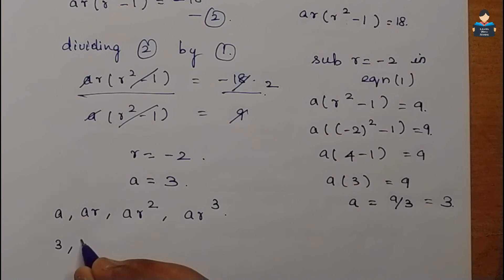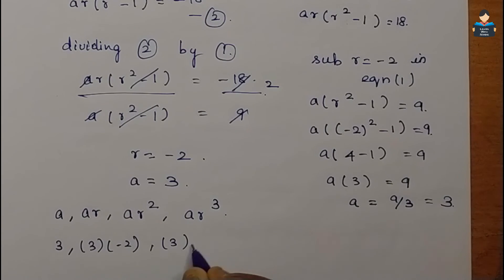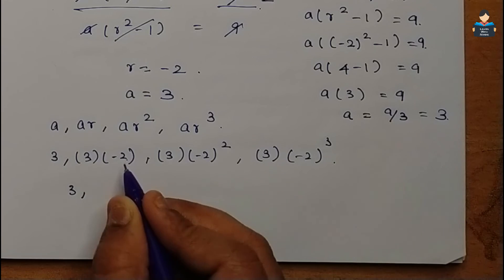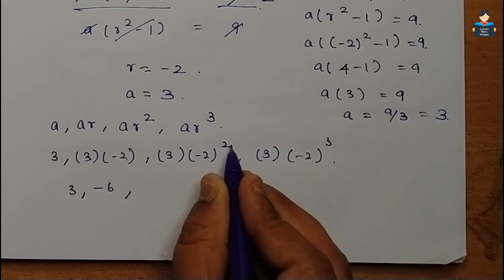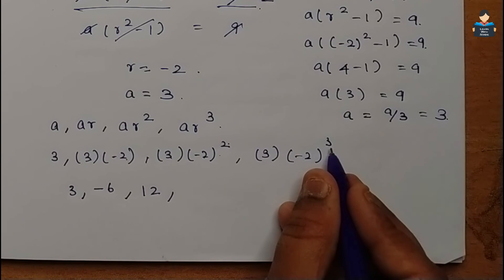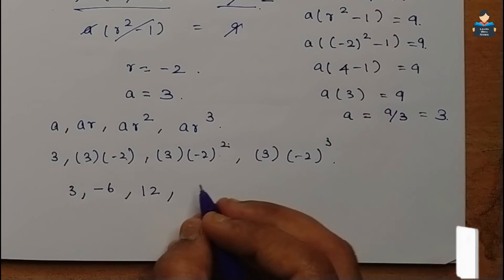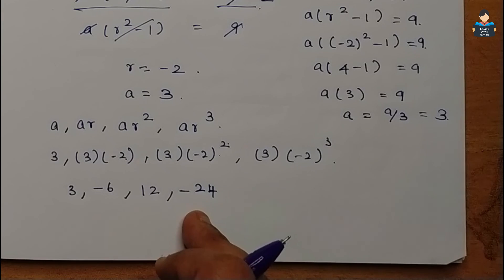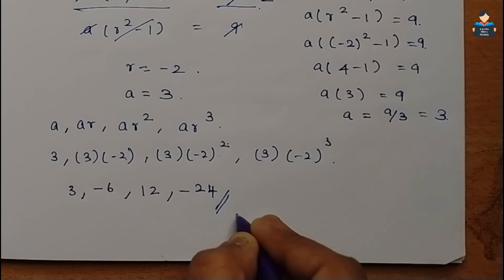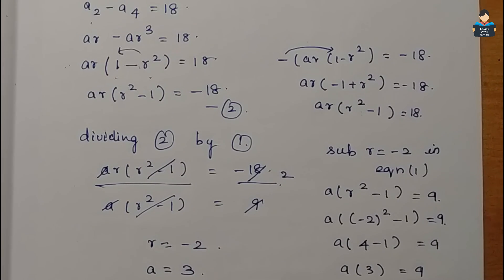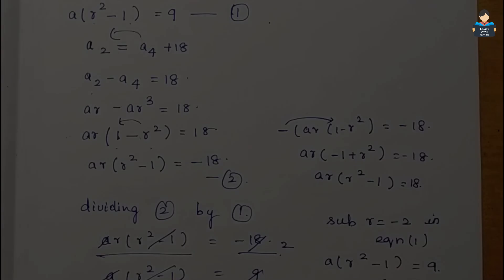The four numbers are: a = 3, ar = 3×(-2) = -6, ar² = 3×4 = 12, ar³ = 3×(-8) = -24. So the four numbers in GP are 3, -6, 12, -24. This is the final answer. The video is complete; the next video will cover additional sums. Please like, share, and subscribe. Thank you.